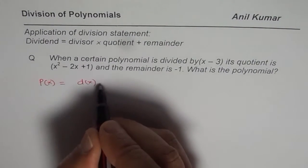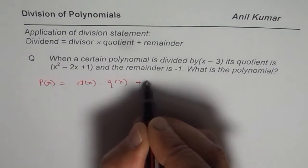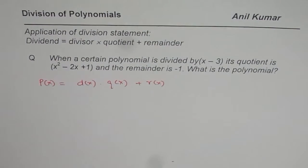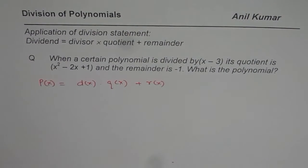times the quotient q of x plus the remainder r of x. So we can use this equation to find the polynomial.